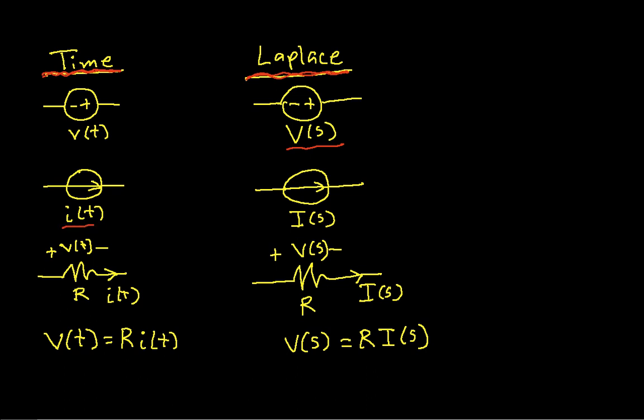Similarly, for a current source, we have a current I of T, and that current in the Laplace transform domain is just I of S, where I(S) is the Laplace transform of I(T). With a resistor, the voltage across the resistor in the time domain equals the resistance times the current. Taking the Laplace transform of both sides, we get that V(S) = R times I(S). So resistors work exactly the same in the Laplace transform domain as they do in the time domain.